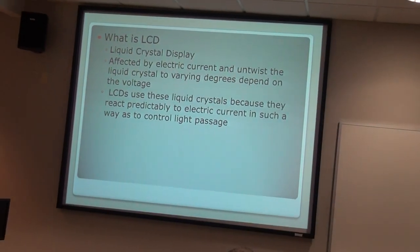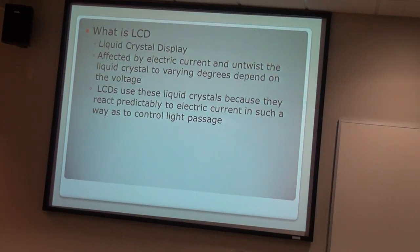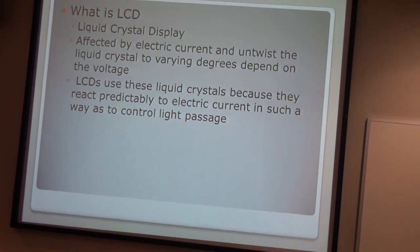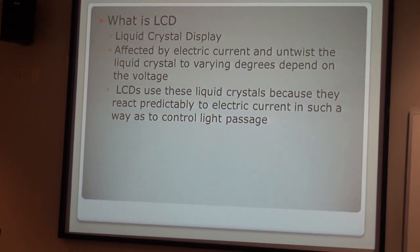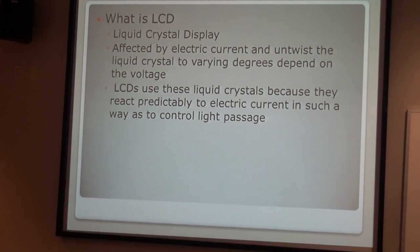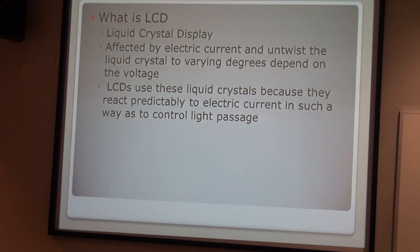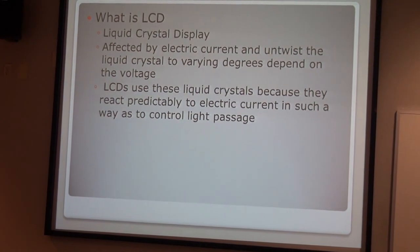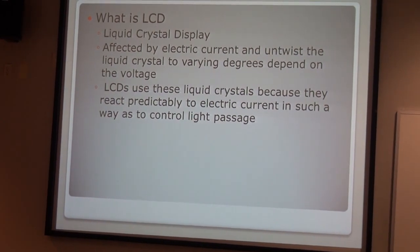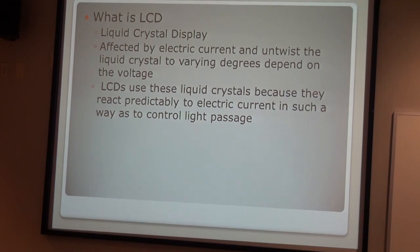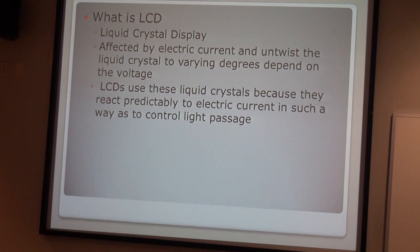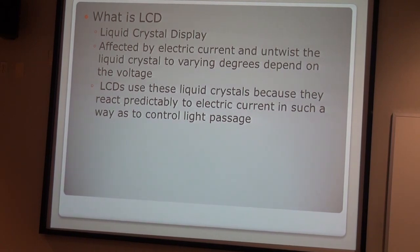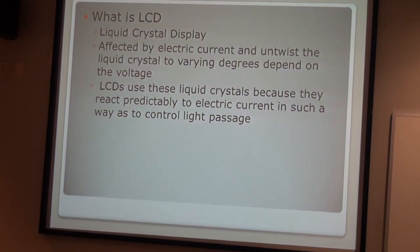The way it works is the LCD is affected by electric current and it untwists the liquid crystal in order to vary the degree, because they depend on the voltage of the current. So the LCD uses liquid crystal because they react predictably to electric current in a way so that it can control the light access.